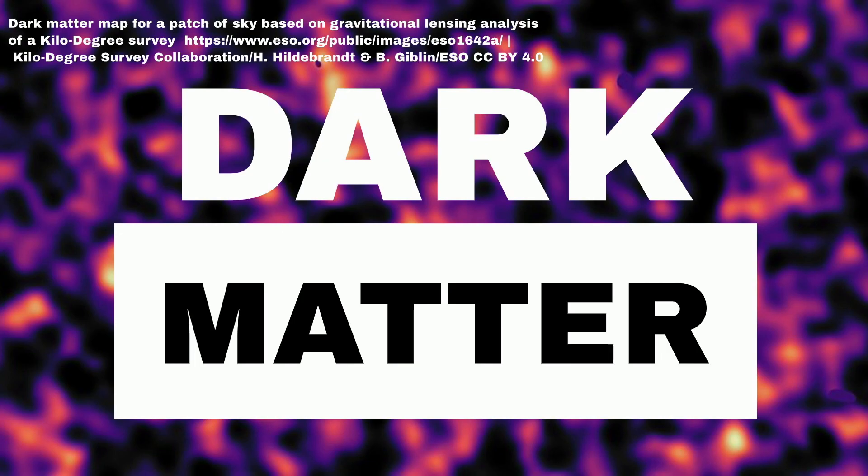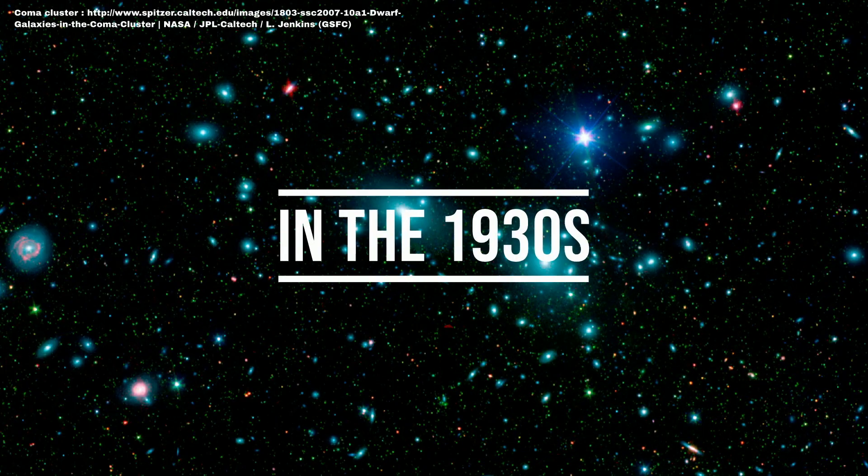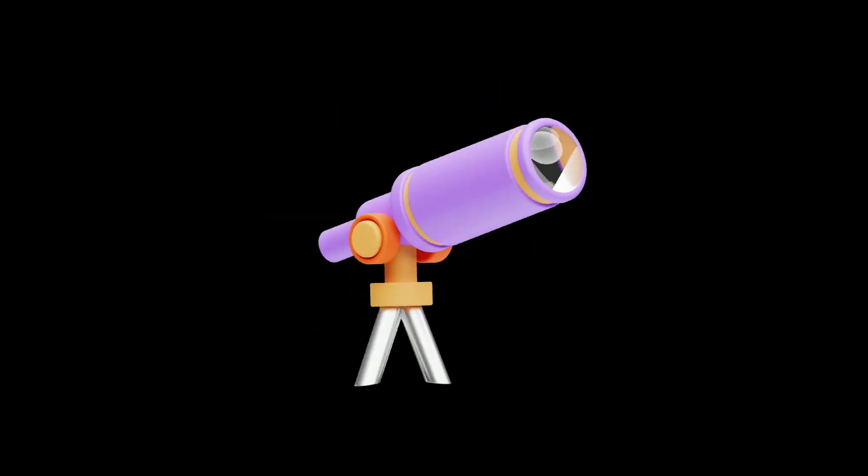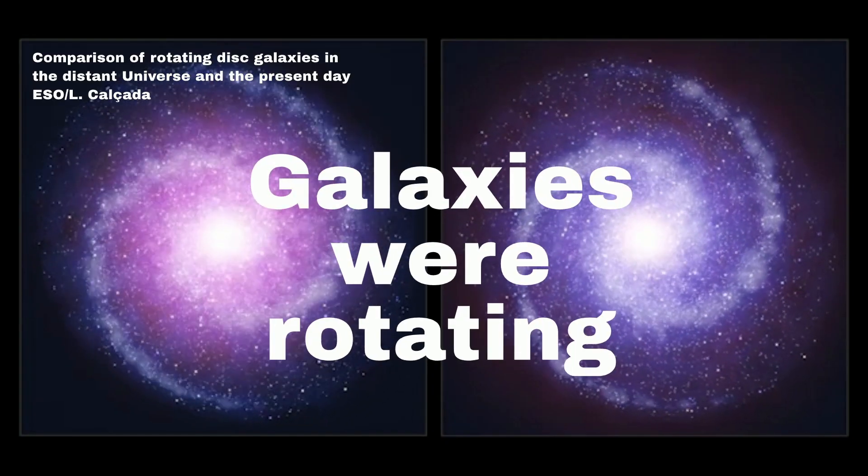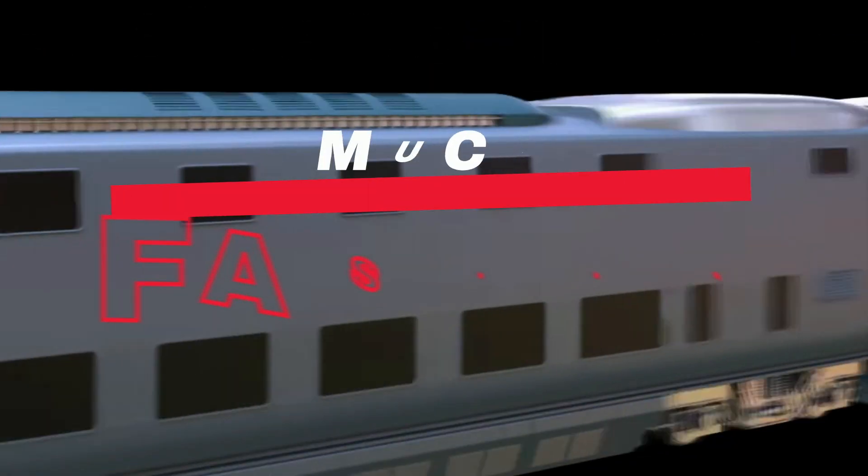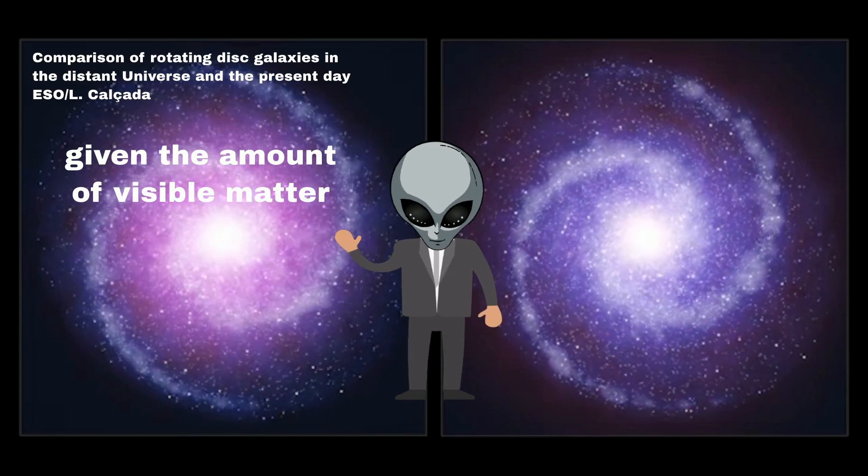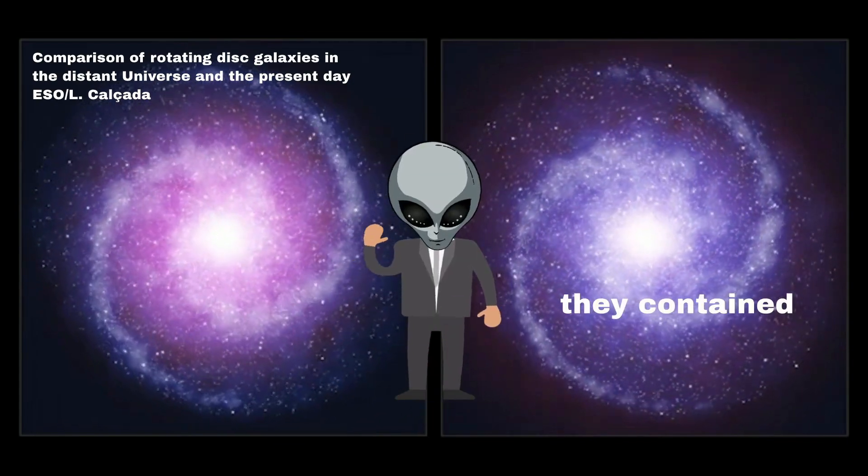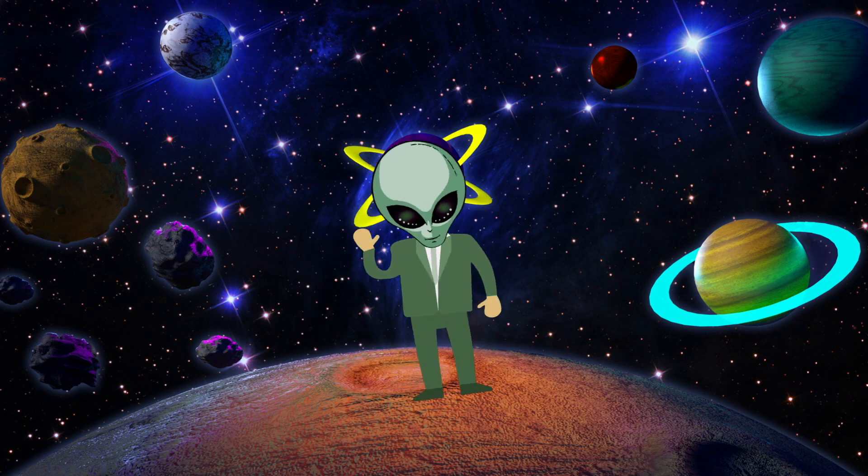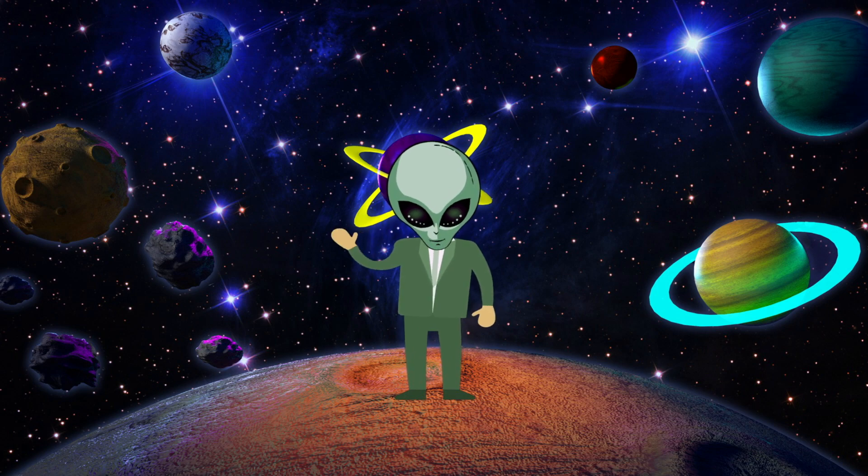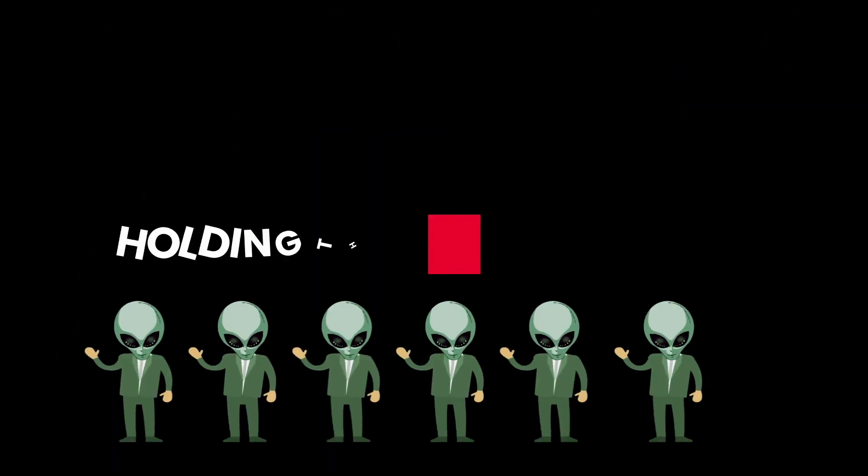Dark matter was first hypothesized in the 1930s when astronomers noticed that galaxies were rotating much faster than they should have been, given the amount of visible matter they contained. The only way to explain this was if there was a lot of invisible matter holding them together.